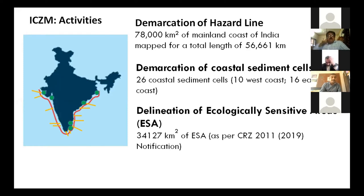The third important activity was the delineation of ecologically sensitive areas (ESAs), as per the CRZ 2019 notification. We were able to map 34,127 square kilometers of ESA. The hazard line and ESA maps were accepted by each state after extensive consultations, stakeholder meetings, and district-level corrections. The ultimate product is the integrated coastal zone management plan, which every state runs through a dedicated State Project Monitoring Unit (SPMU).